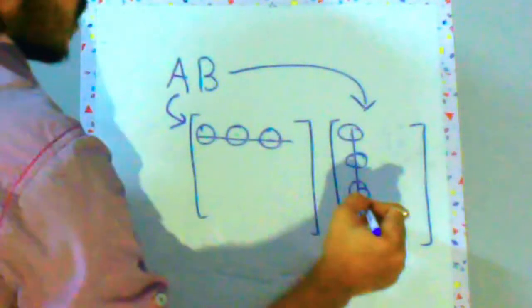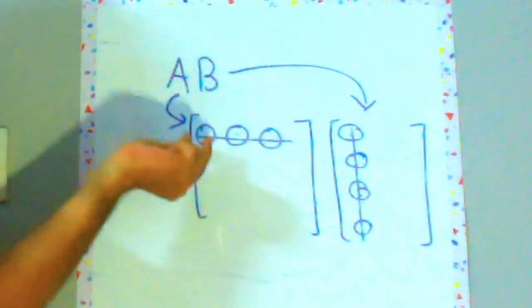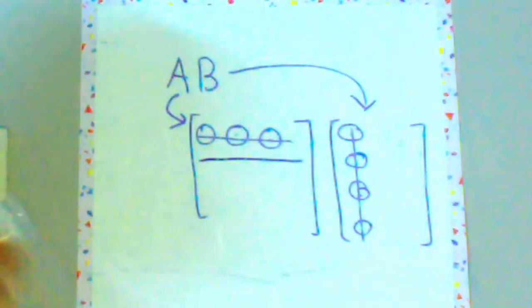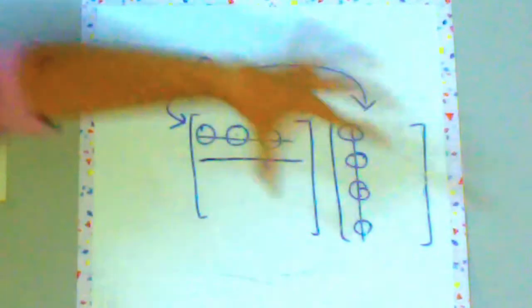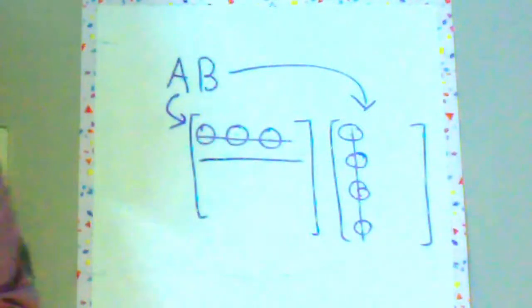So this into this plus this into this plus this into this and so on. And you write that in the first cell and so on. So we will be using this matrix multiplication formula.